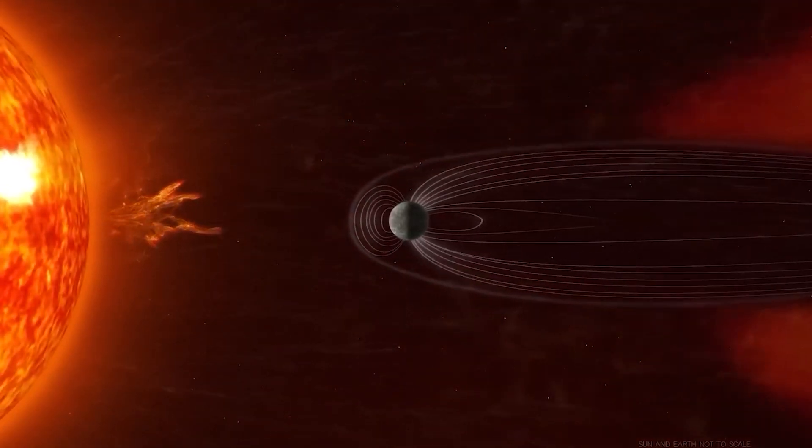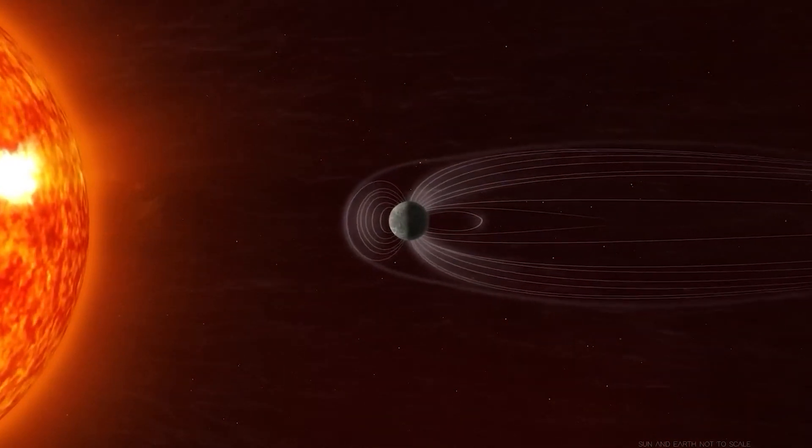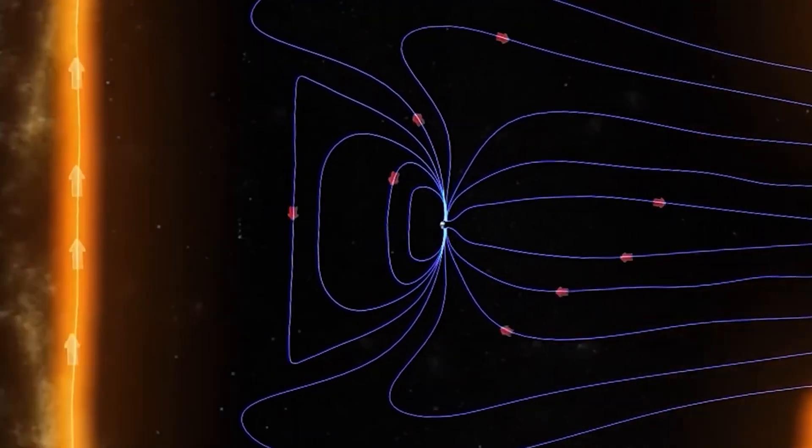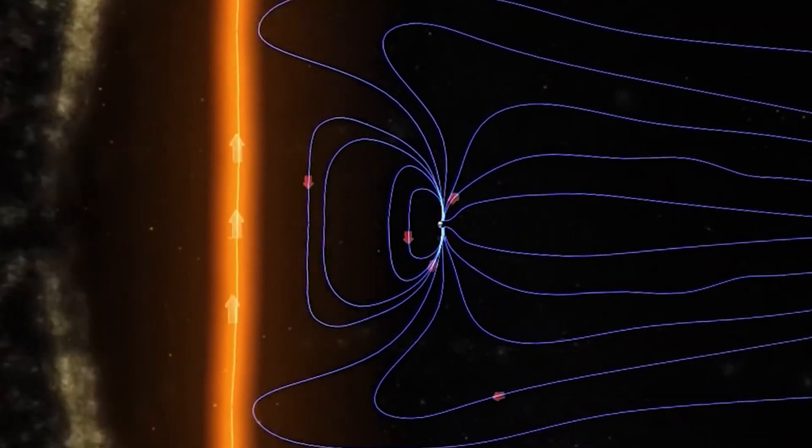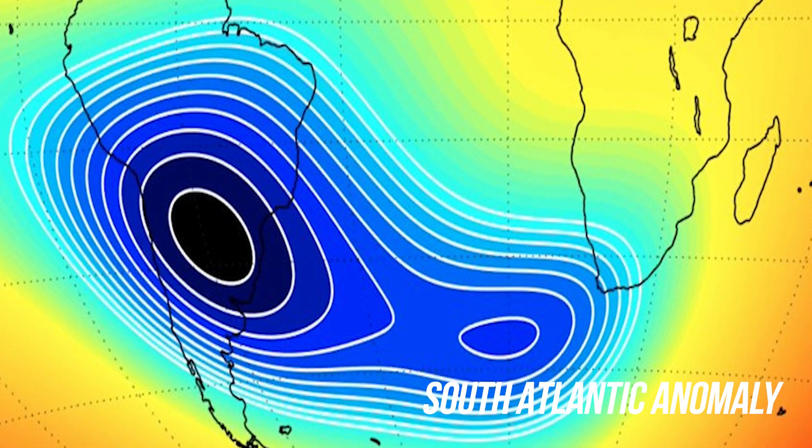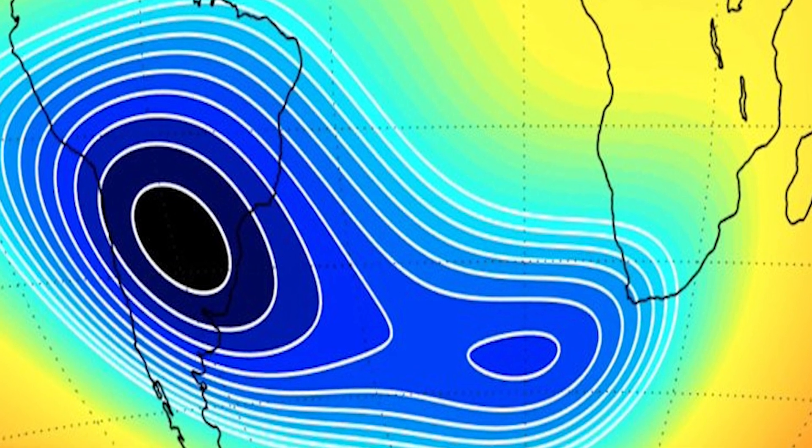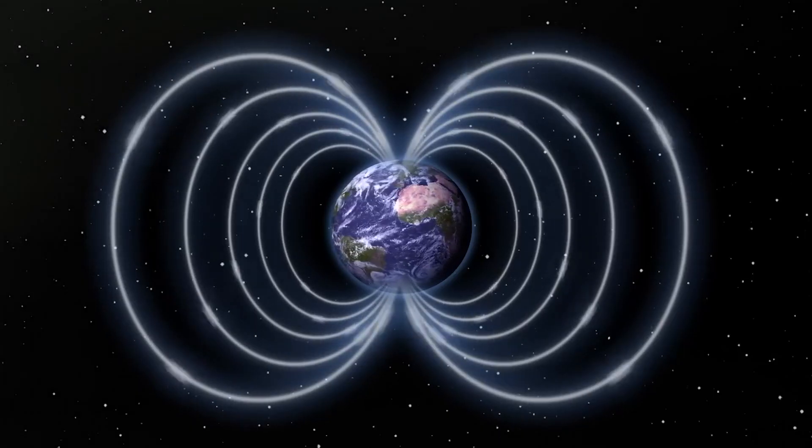Earth's magnetic field is incredible, and this is why we are alive and living our lives to the fullest here. But this magnetic field isn't even at all the places on this planet. One specific anomaly that has been detected and fascinated scientists is the South Atlantic anomaly. To understand this weird yet exciting phenomenon, let's start from the beginning.